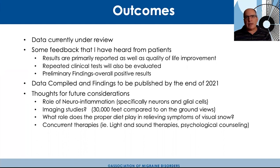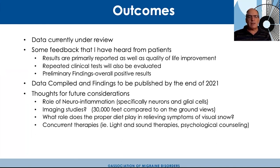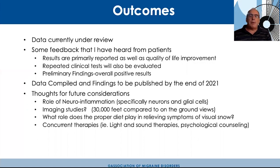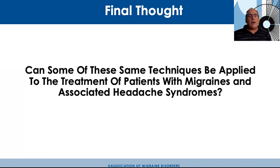For future considerations, I'm thinking about what role neuroinflammation plays — specifically neurons and glial cells. I really want to understand that better, though imaging doesn't currently go to that level of detail. I'm also thinking about what role proper diet, proper sleep environment, and concurrent therapies like light and sound therapy or psychological counseling might play in relieving symptoms. Our final thought is: can some of these same techniques be applied to the treatment of patients with migraines and associated headache syndromes? That's a possibility, and there'll be more to study in that area moving forward.